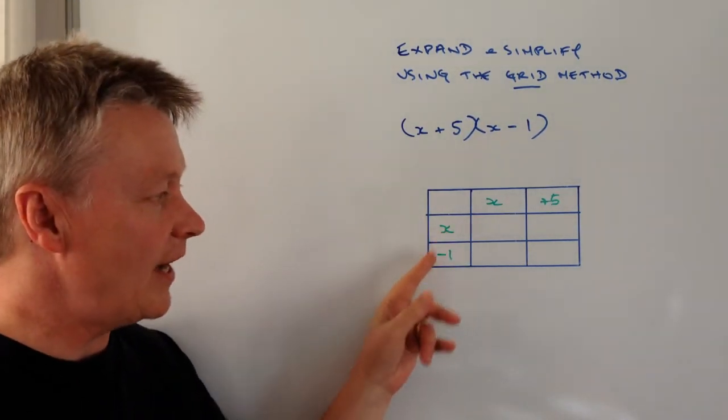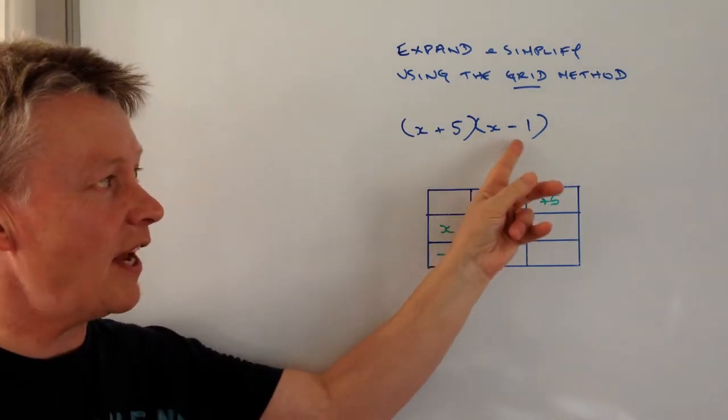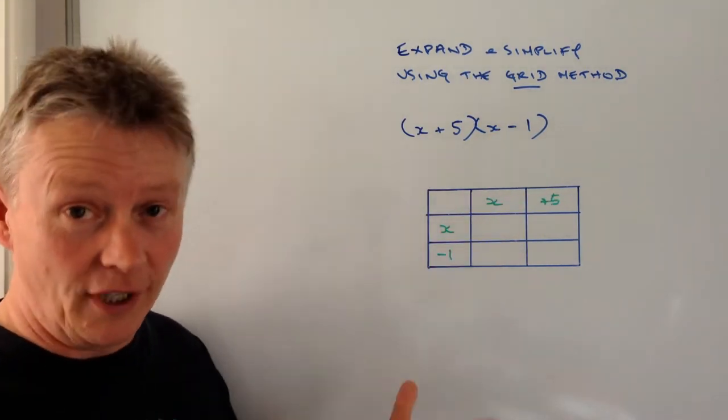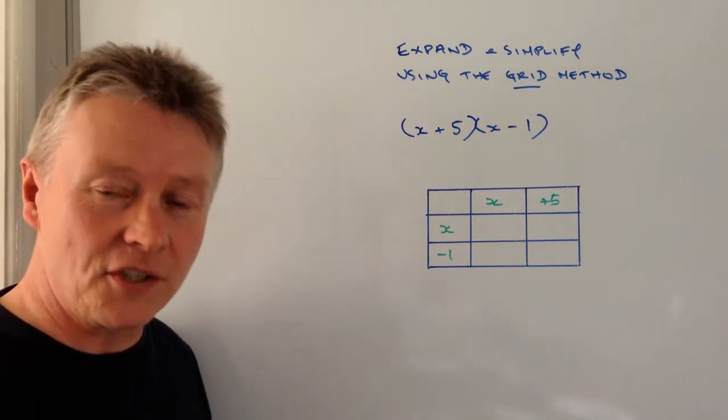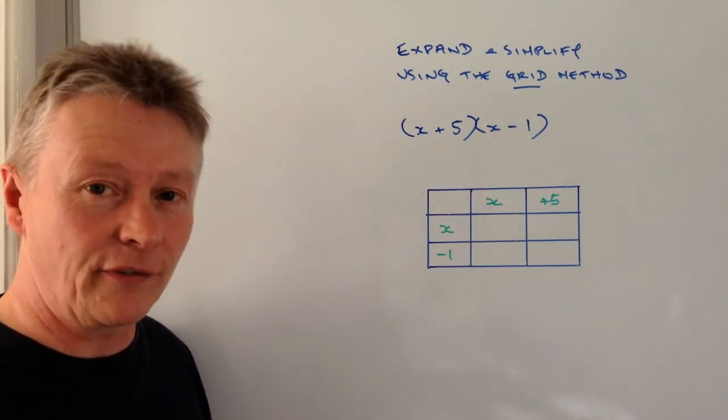So down the side here I've put x and minus 1, which is this x and this minus 1 on the right hand side, and x and then plus 5, and it's really just a case of multiplying through.